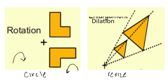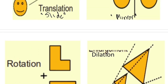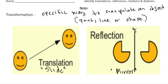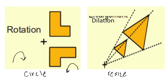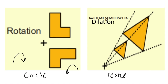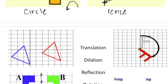Let's review our four different types of transformations. We have our translation, which is a slide. We have our reflection — think of a mirror. We have a rotation — think of an object moving in a circle. And finally we have a dilation, where an object is being resized.